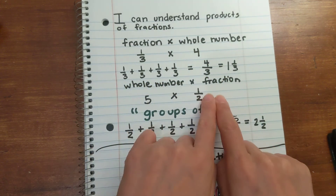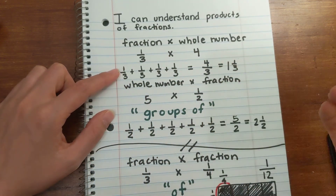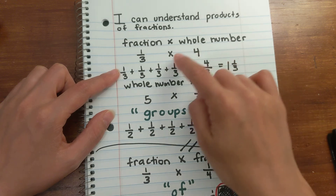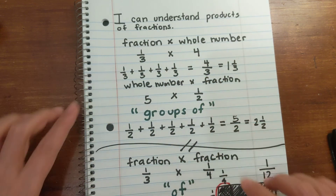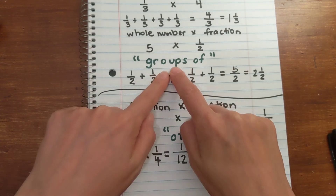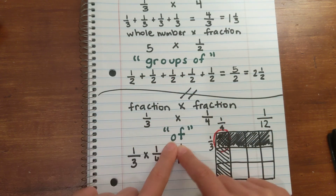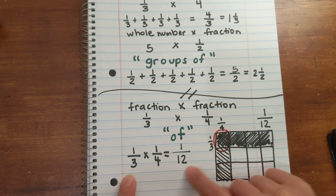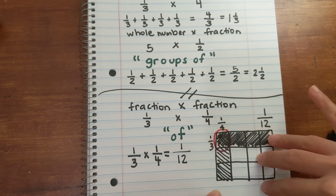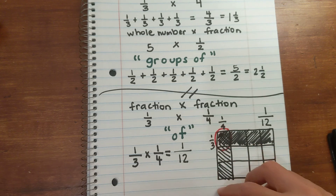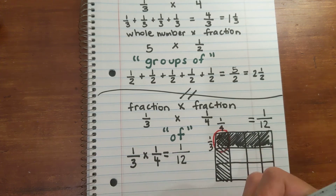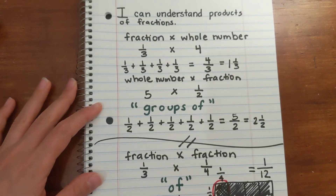To recap — I can understand products of fractions. The simpler concept is a fraction times a whole number or a whole number times a fraction: think 'groups of.' One third times 4 — four groups of one third. Five times one half — five groups of one half. For a fraction times a fraction, you can't think 'groups of' — you think 'of,' because you're taking a part of a part. The fluent way is multiplying across numerator and denominator. The visual way: draw a whole, represent one fraction horizontally, the other vertically, color in the strips, and the overlap is your product.